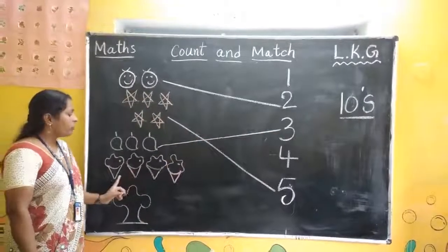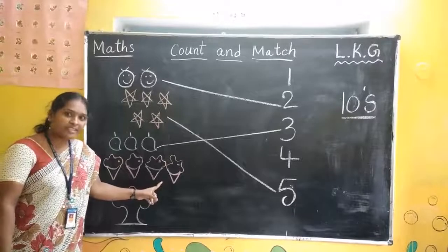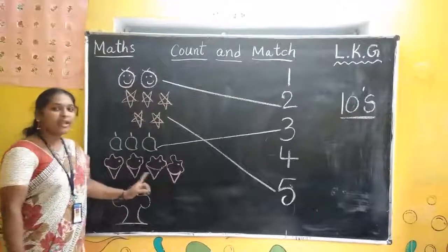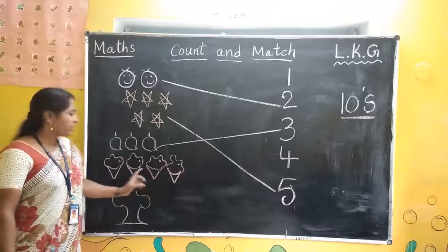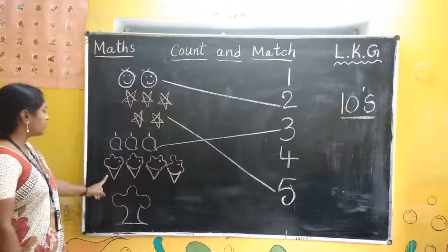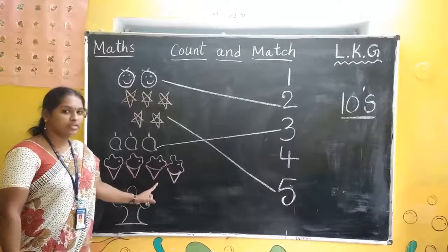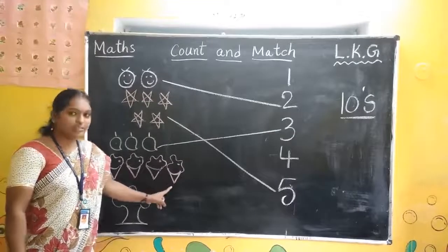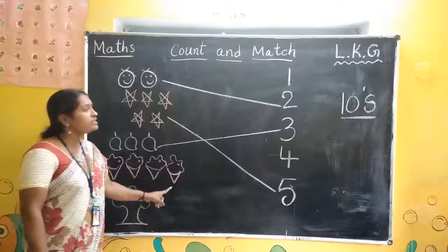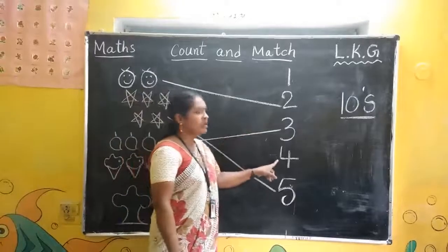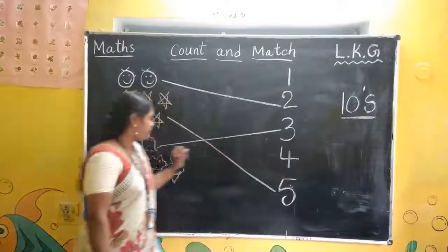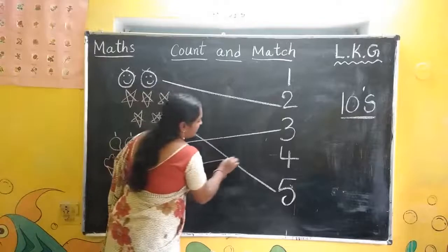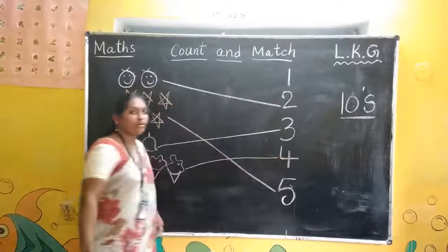Now, what are these? These are ice creams. How many ice creams are there? Come and count it. One, two, three, four. Four ice creams are there. Where is number four? Here. Draw the line to number four.